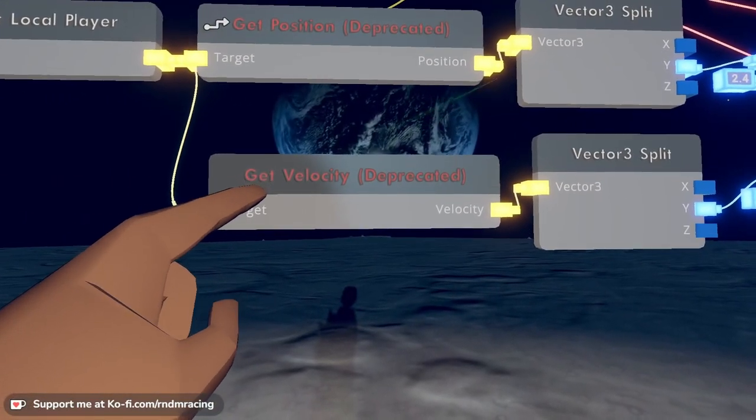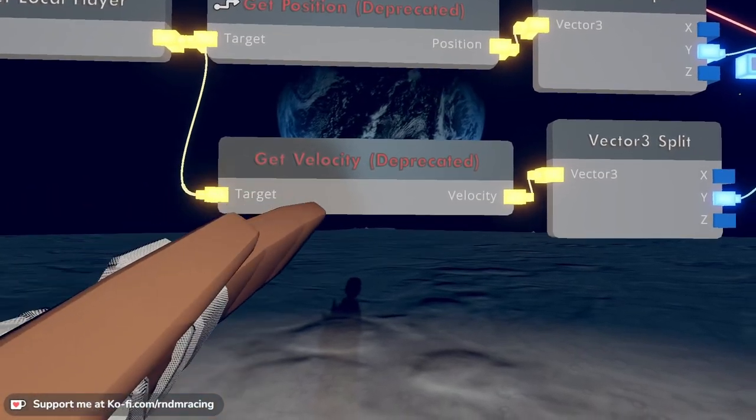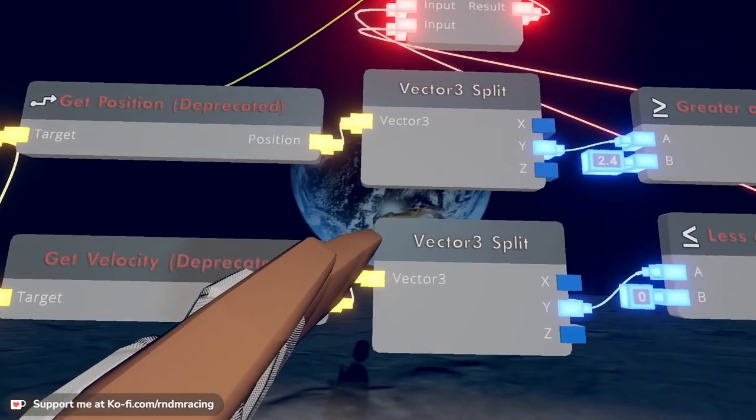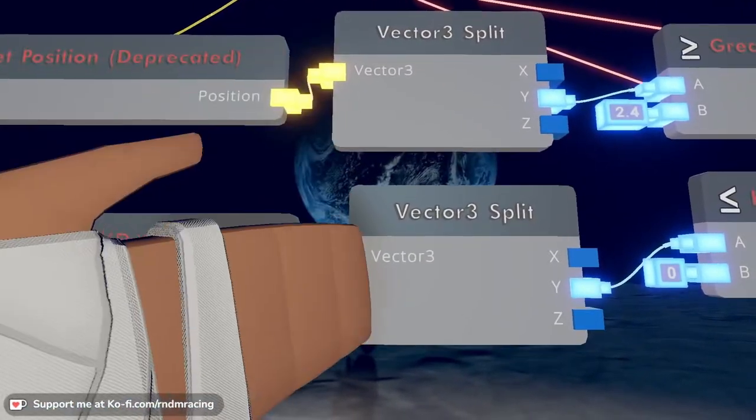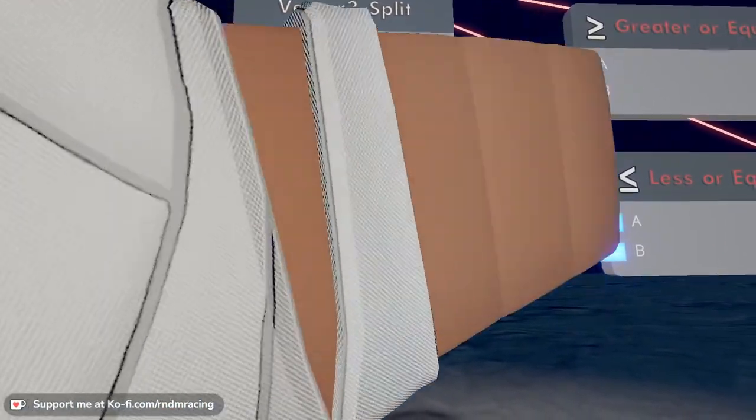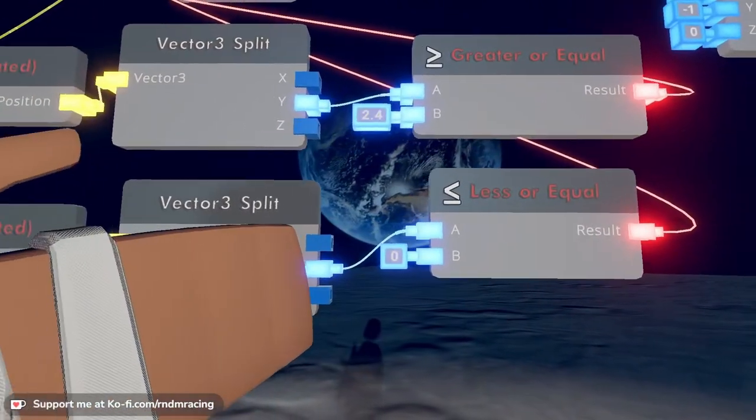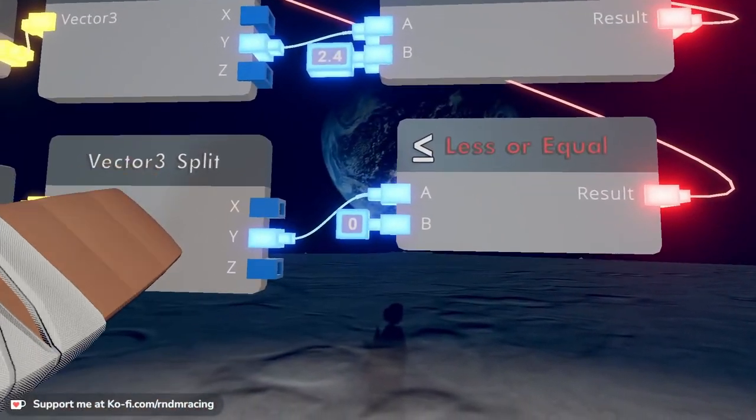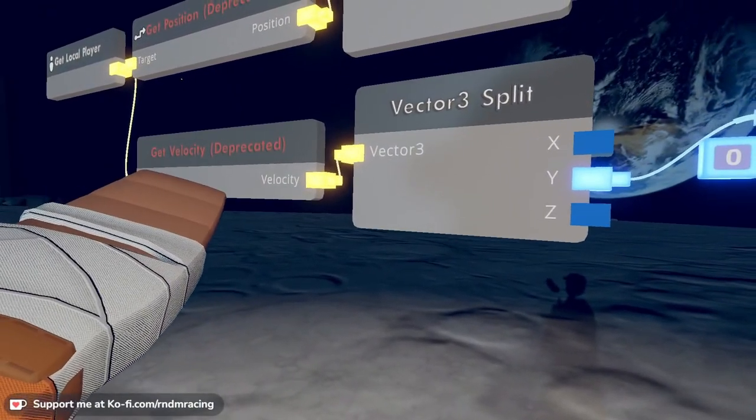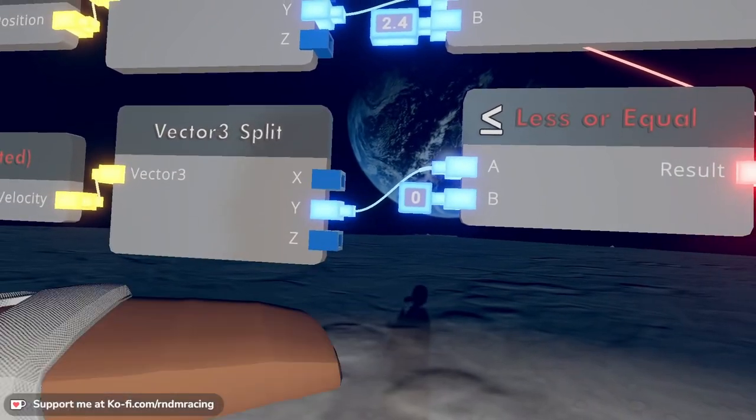And then we have the Get Velocity. This one's new, we didn't use this one last time. Get Velocity just tells you how fast the player is, right? And we're gonna split those into the Vector Split again, so we get the coordinates X, Y, Z. And again, we're only using the Y's right now. We're gonna want to know two things about this.